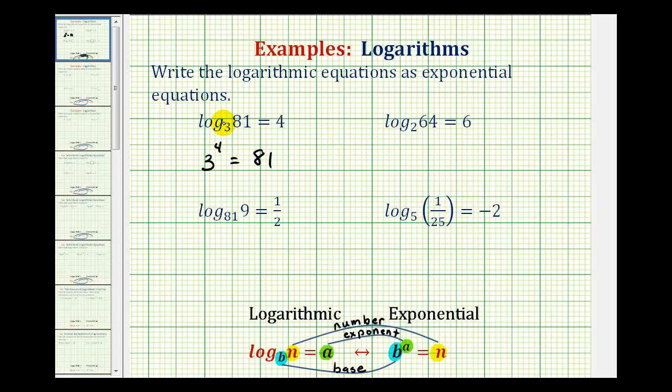When converting from log form to exponential form, we can verify this is correct by just evaluating the left side and making sure it equals the right side. Three to the fourth does equal 81, therefore this is correct.